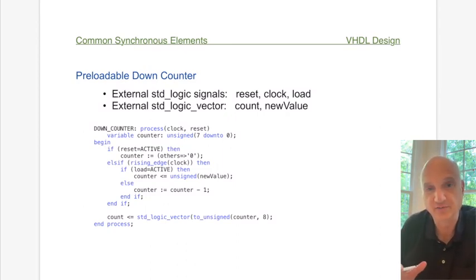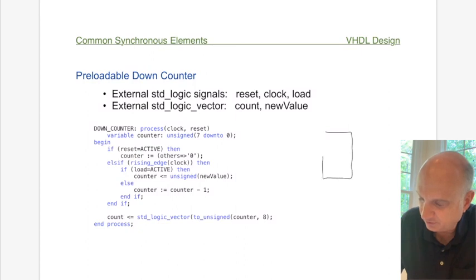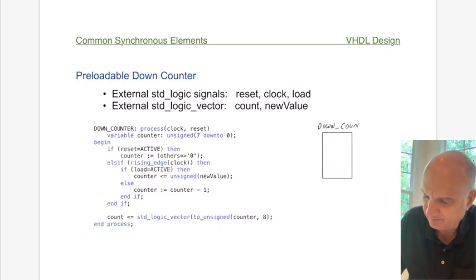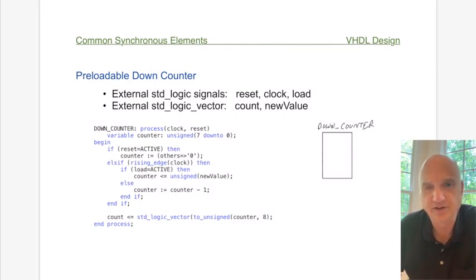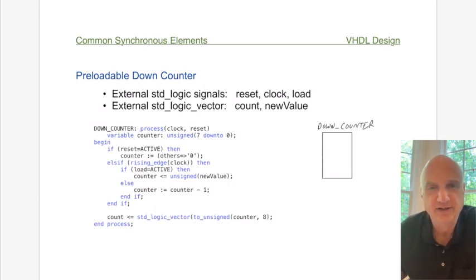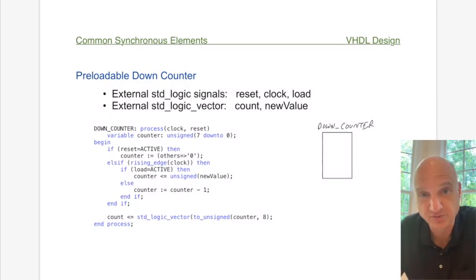The idea is to create a counter that counts down on the clock edge, but also has a synchronous load so you can load a value into the register whenever you want. You start the counter and it counts down with every clock cycle — except when the load control signal is activated, at which point it loads a new value into the counter.